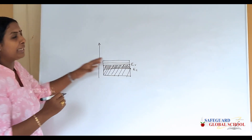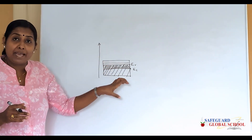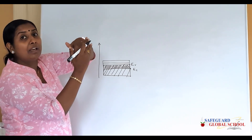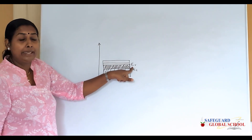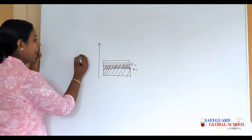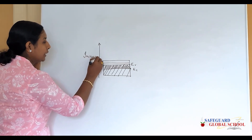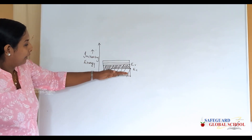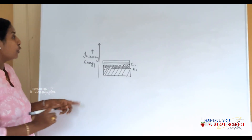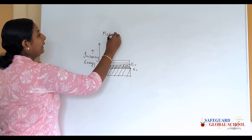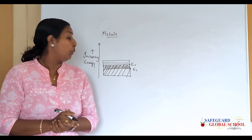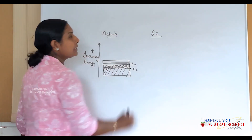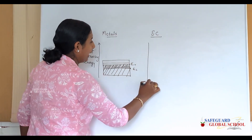In metals, the valence band and conduction band coincide such that the lower level of the conduction band is below the upper level of the valence band. It is important to show the energy axis with increasing energy upward, to indicate that the valence band is always the lower band and the conduction band is the upper band. At normal temperatures, the conduction band and valence band of metals coincide.